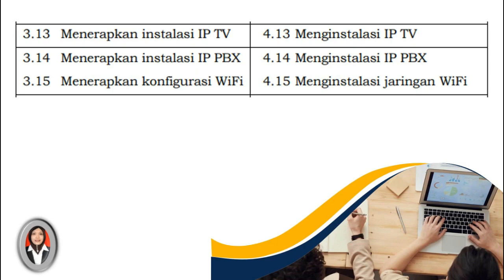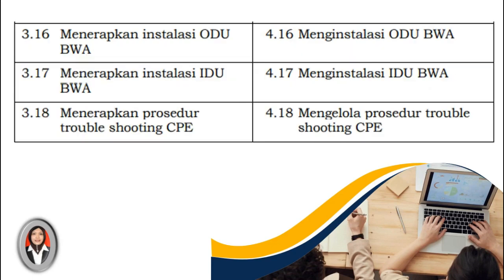KD 3.15 yaitu menerapkan konfigurasi Wifi, dan 4.15 yaitu menginstalasi jaringan Wifi. Untuk KD 3.16 yaitu menerapkan instalasi ODIU BWA, dan KD 4.16 yaitu menginstalasi ODIU BWA. KD 3.17 yaitu menerapkan instalasi AIDU BWA, dan KD 4.17 yaitu menginstalasi AIDU BWA. KD 3.18 yaitu menerapkan prosedur troubleshooting CPI, dan untuk KD 4.18 yaitu mengelola prosedur troubleshooting CPI.